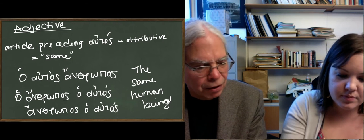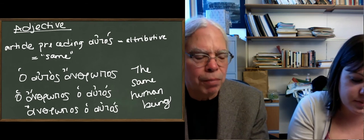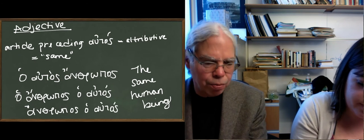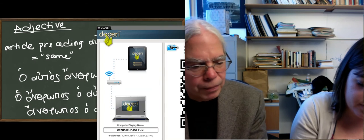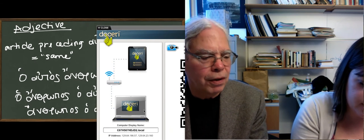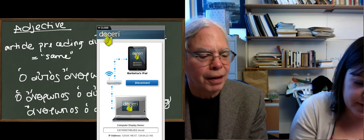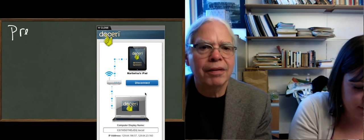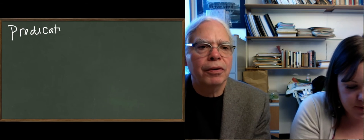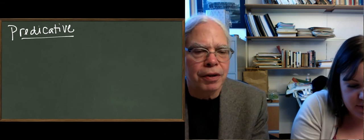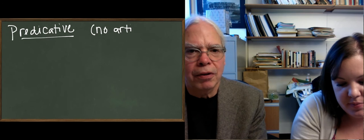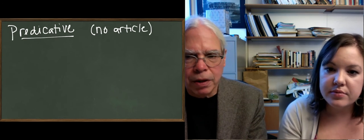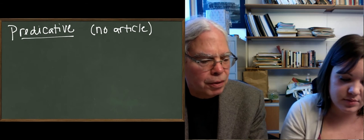Third screen is going to be the adjective when it's in predicative position. In other words, not in an attributive position. When there is no article preceding it without an intervening noun. Technical difficulties.